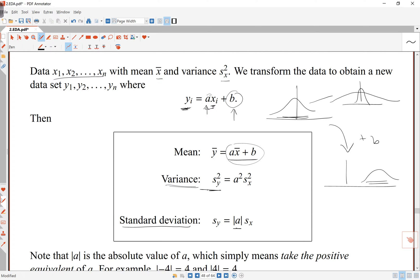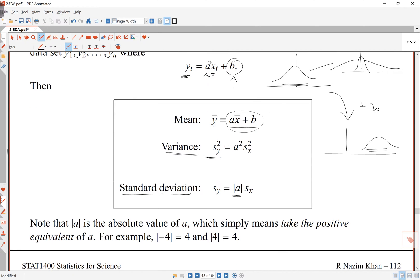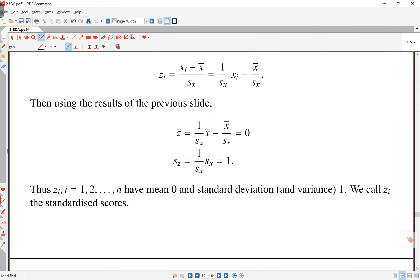The only problem is that a can be negative, so we make sure it's positive by taking the absolute value of it. Absolute value simply means, whatever the number is, make it positive. So the absolute value of negative 4 is 4. And of course, because 4 is already positive, its absolute value is 4 as well. So this transformation idea is important.